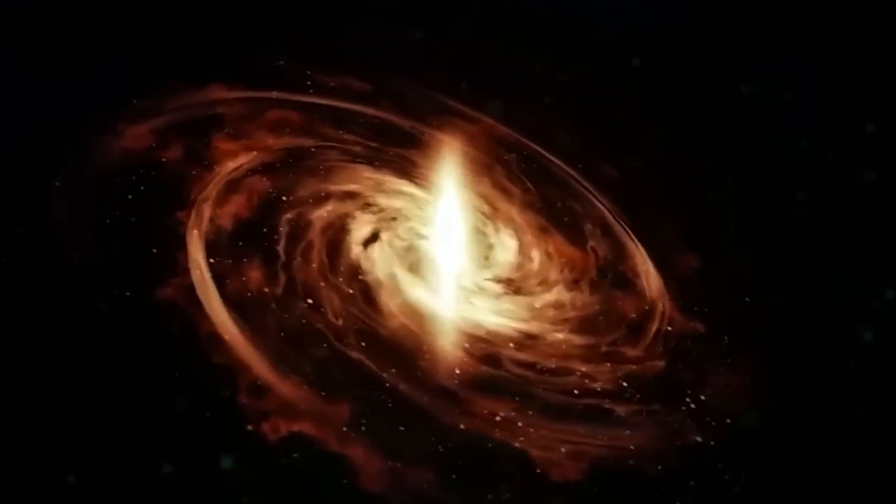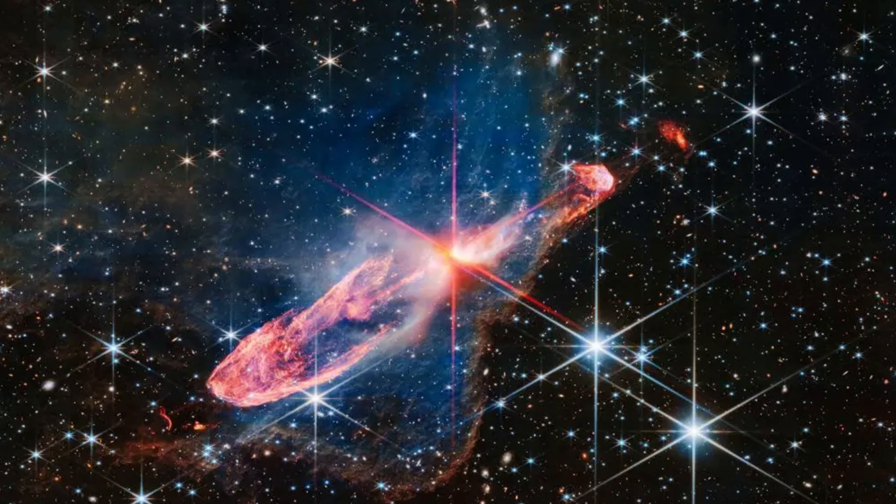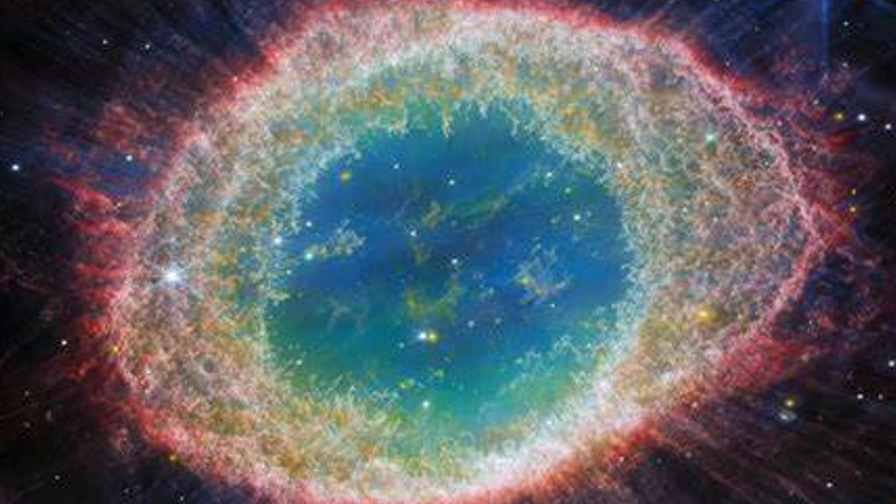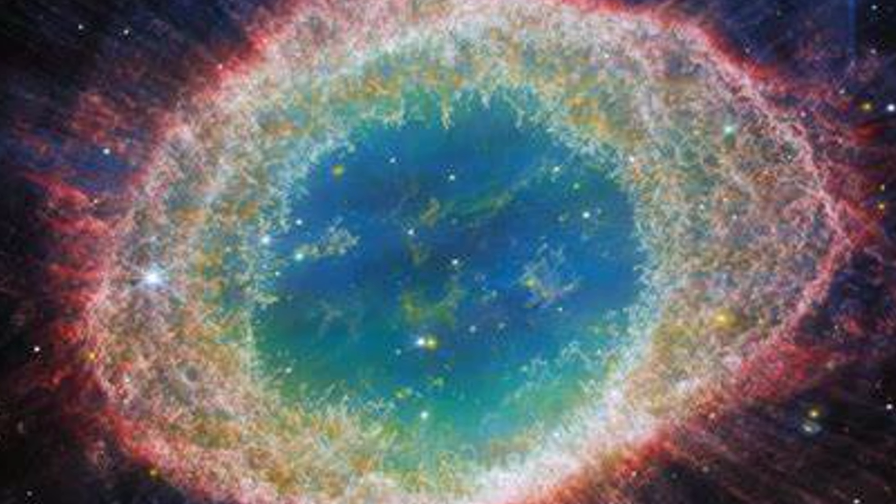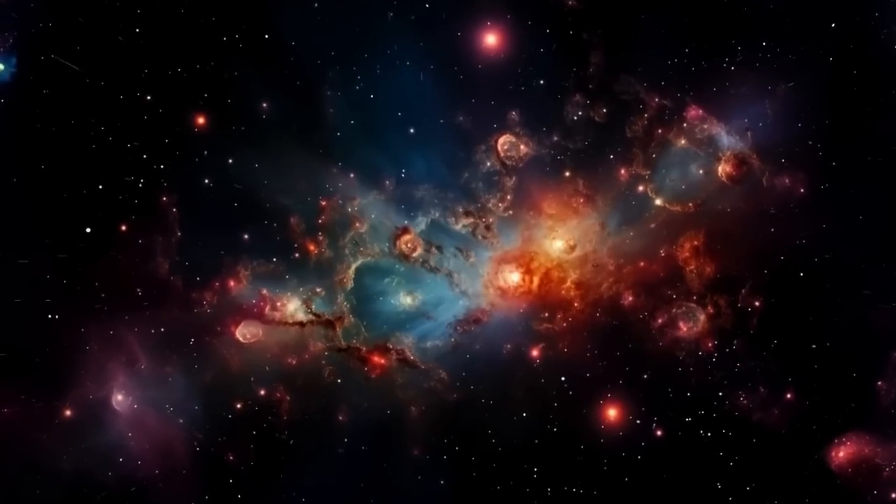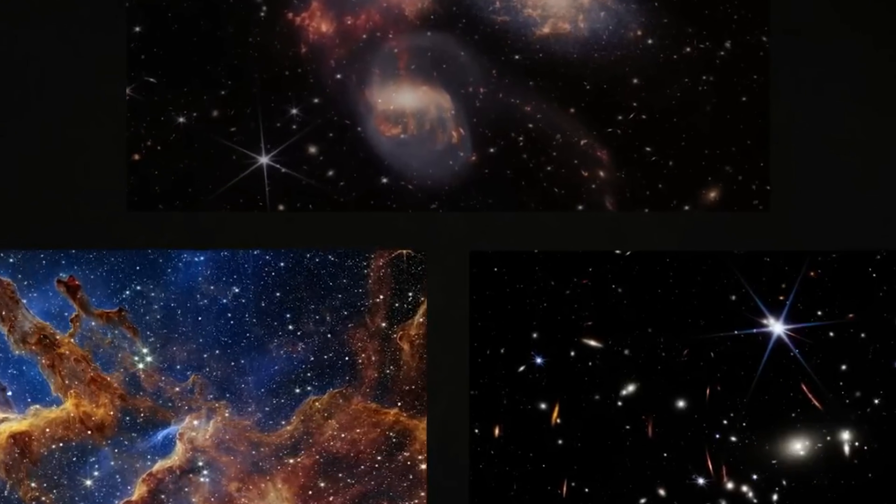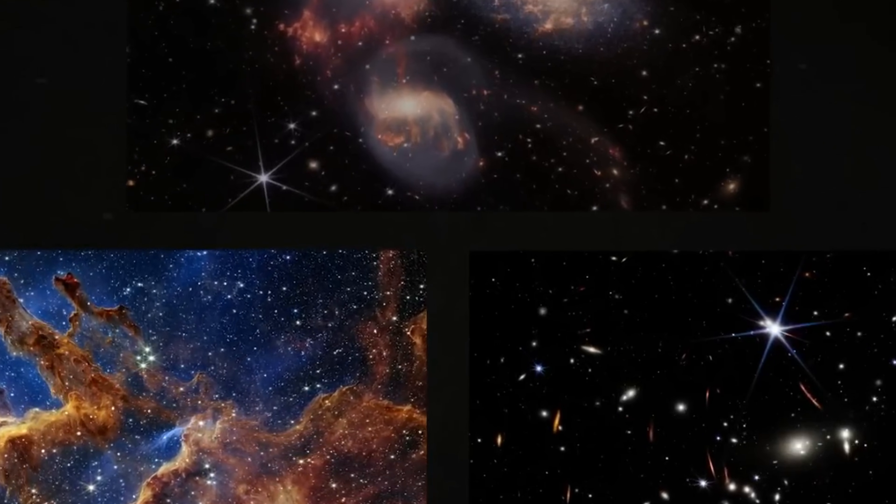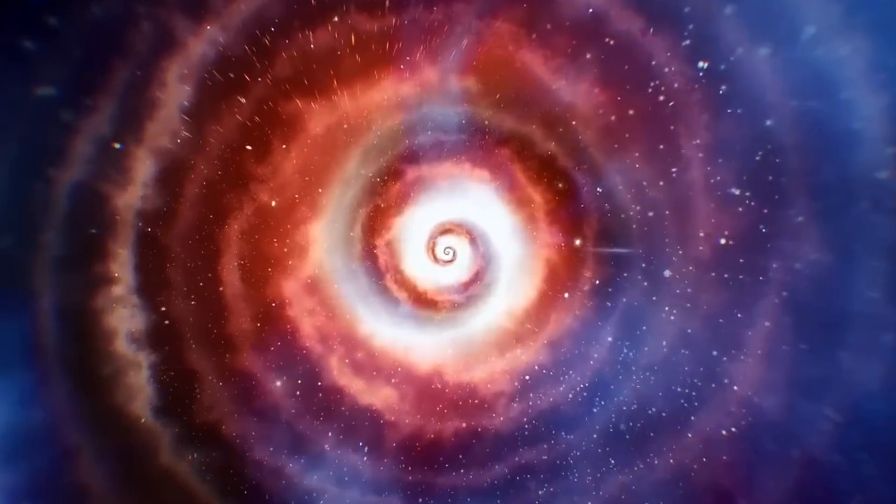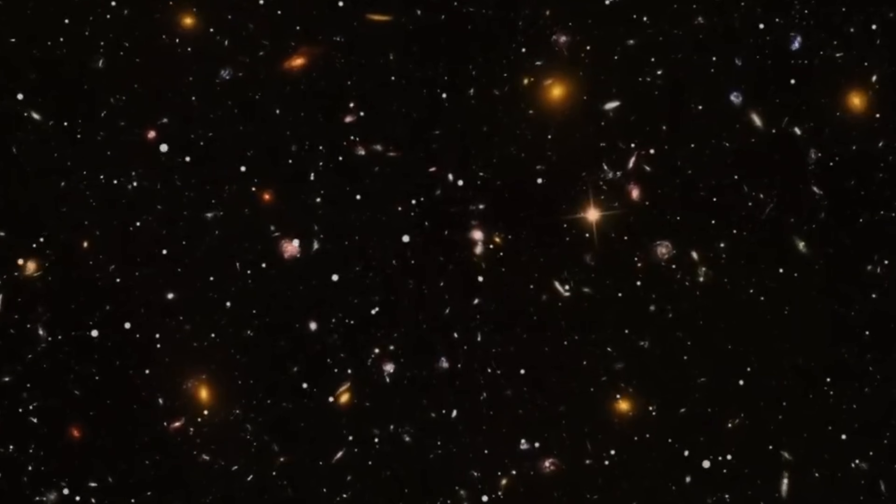In addition to observing distant galaxies, Webb has also captured breathtaking images of nearby nebulae, which are vast clouds of gas and dust where stars are born. The Carina Nebula, a star-forming region located around 7,600 light-years away, is one of the most striking images to come from the telescope. This image showcases Webb's ability to penetrate through the dense clouds of gas and dust that usually obscure such regions.